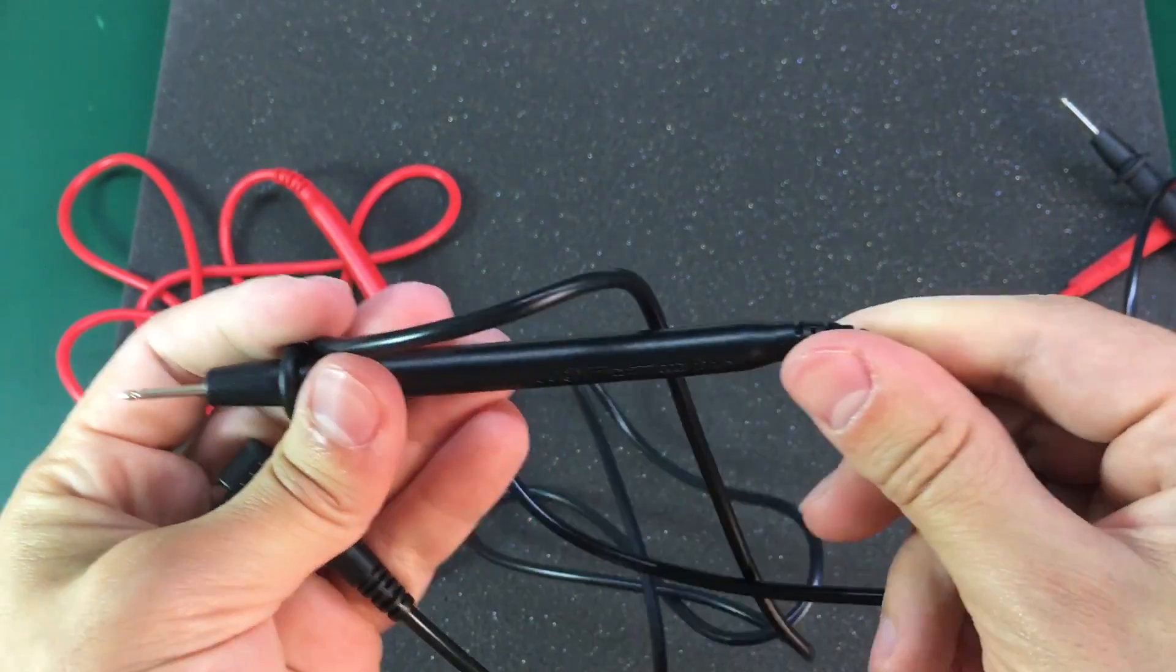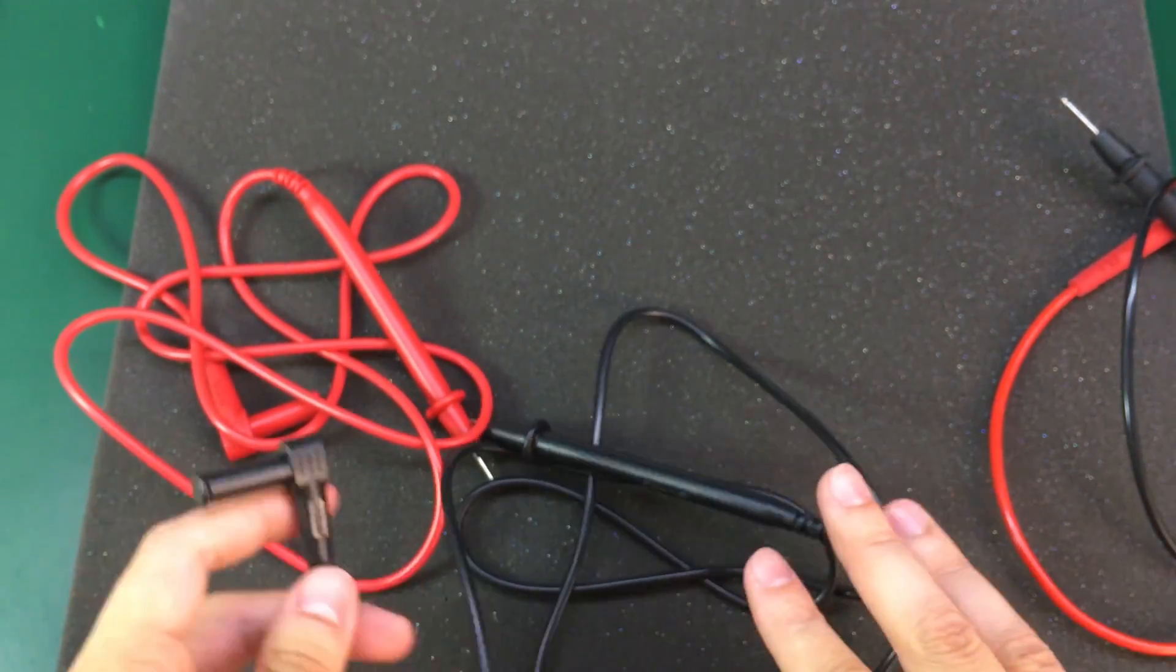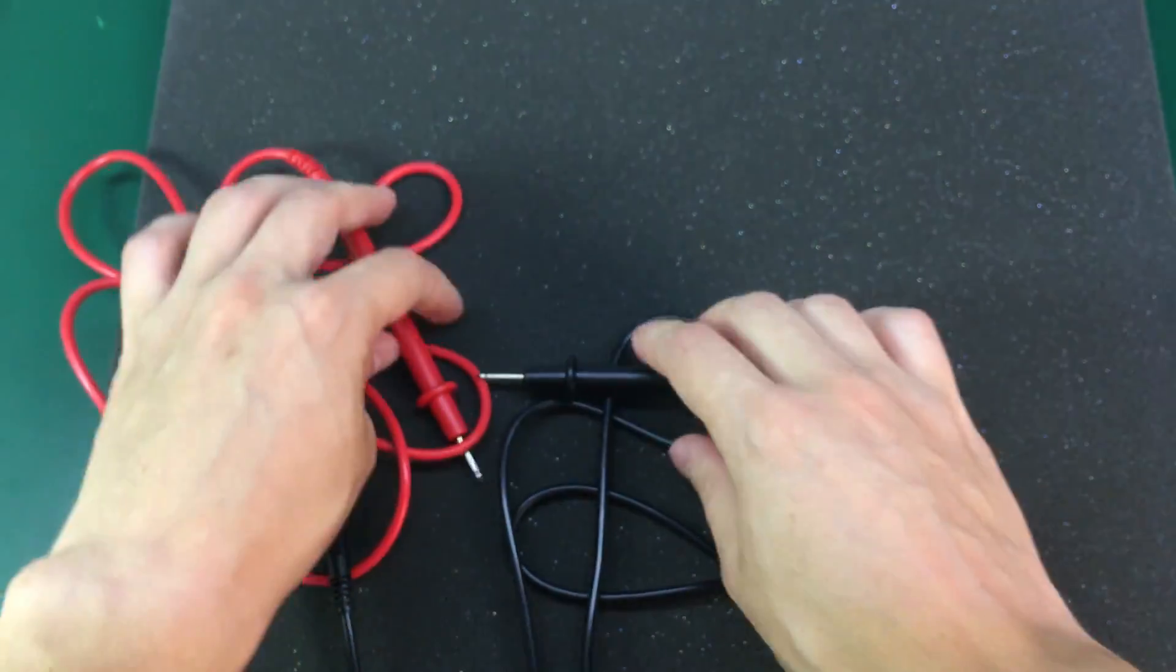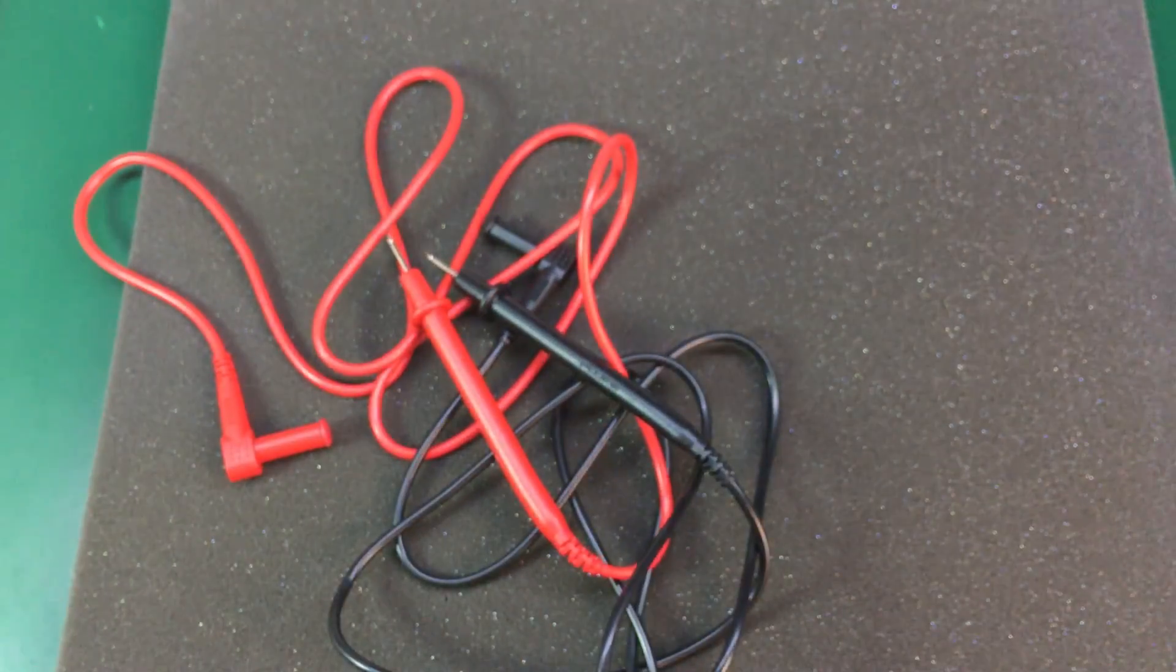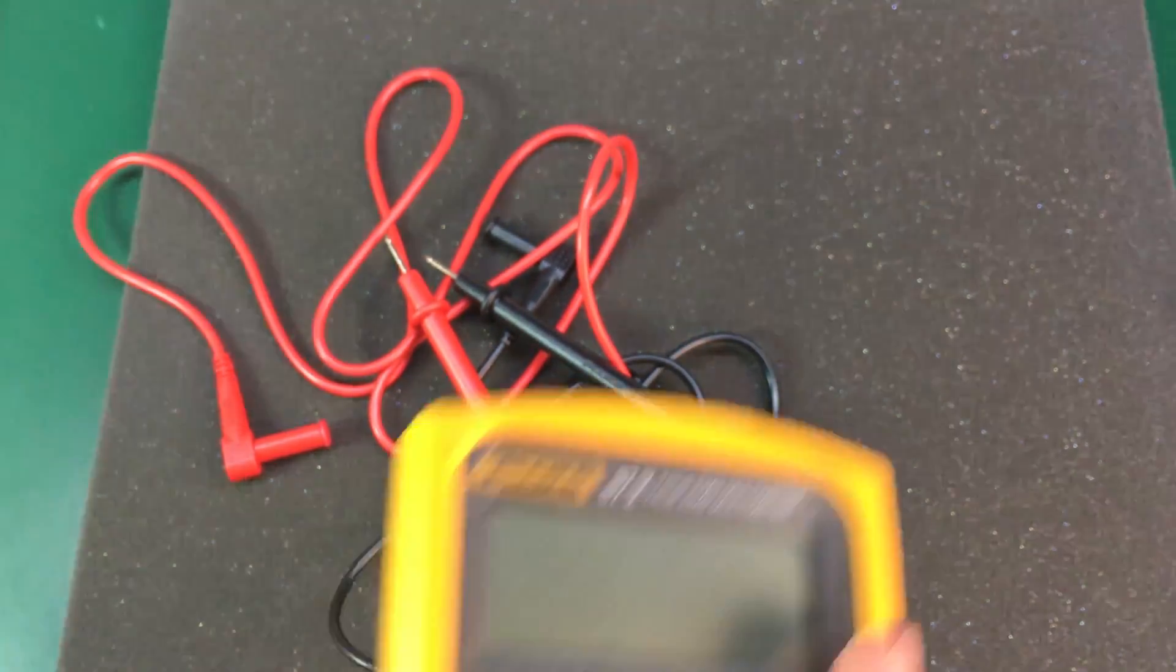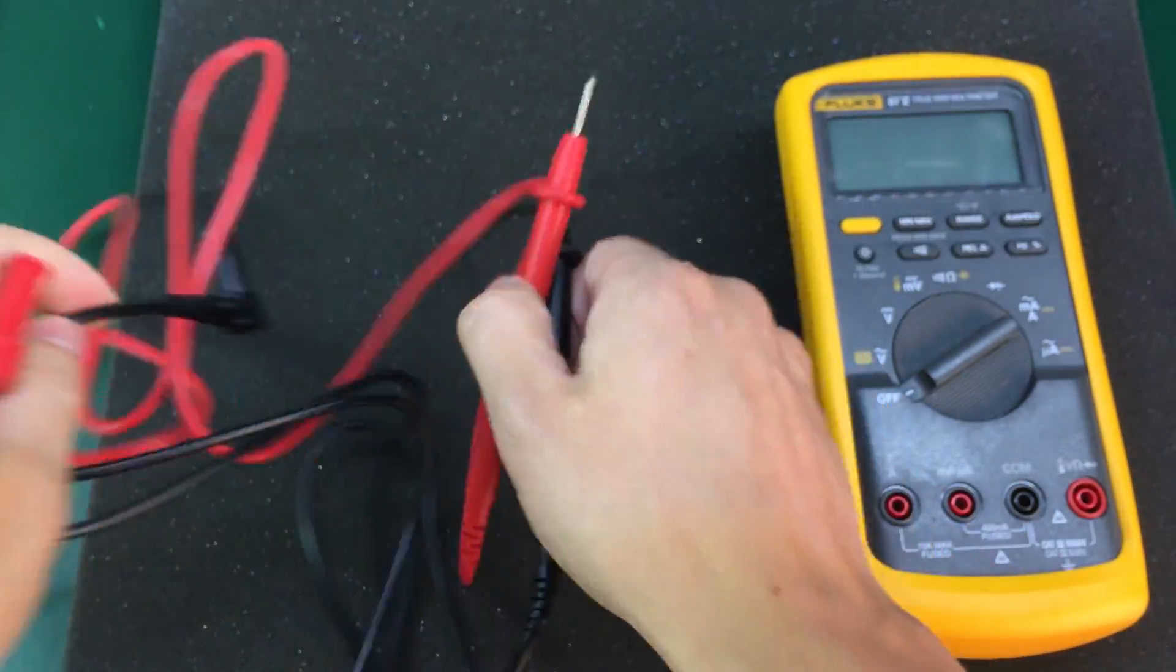So yeah, not as good quality as the original ones, but certainly usable. Let me just get the Fluke 87 and do a continuity test.